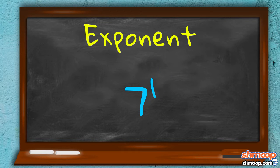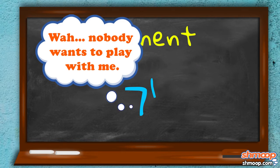What about when the power is 1? Because our exponent is telling us that there's only one 7, he doesn't get multiplied by anything else. So it's the same as a plain old 7.